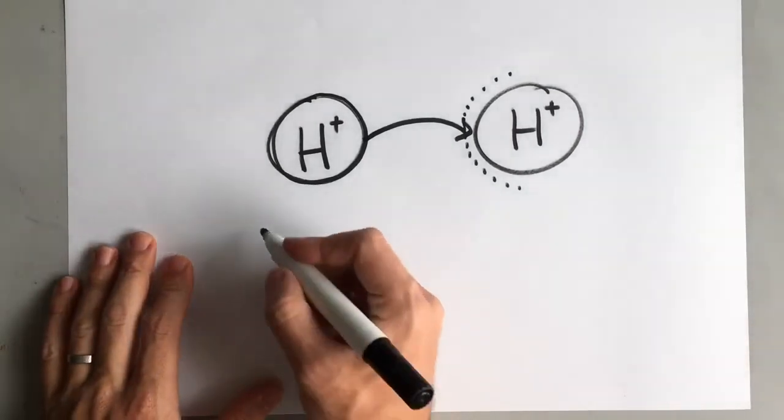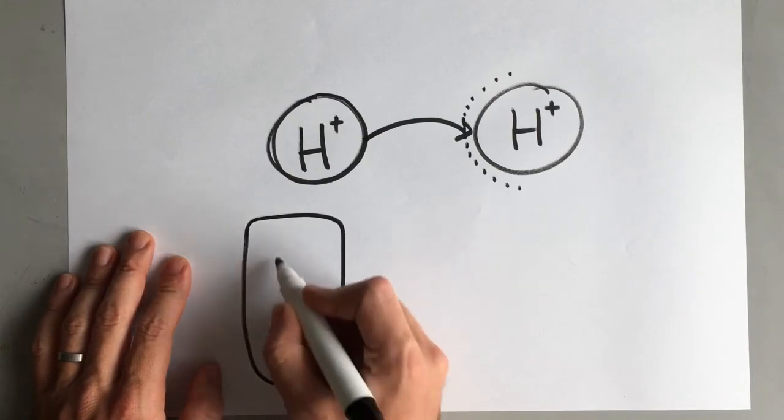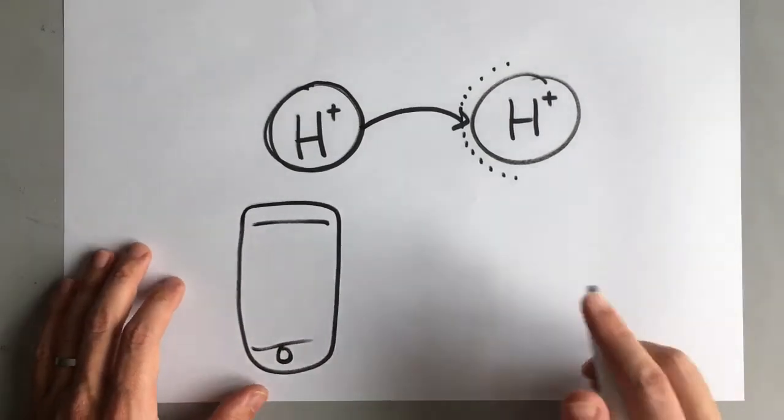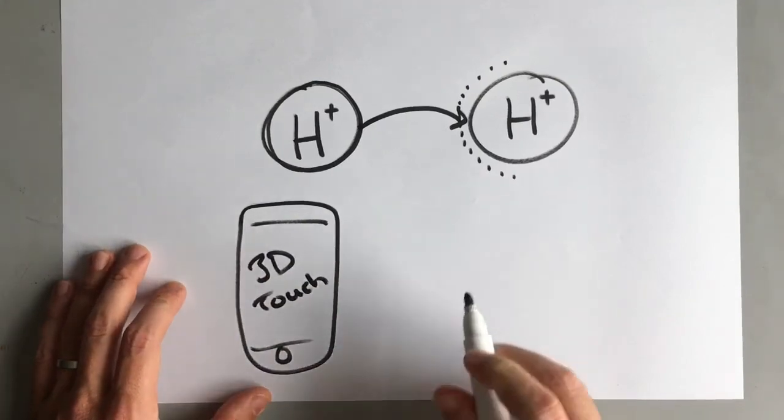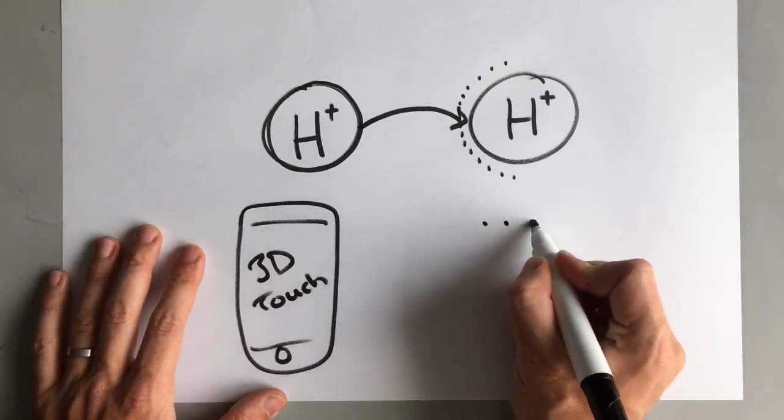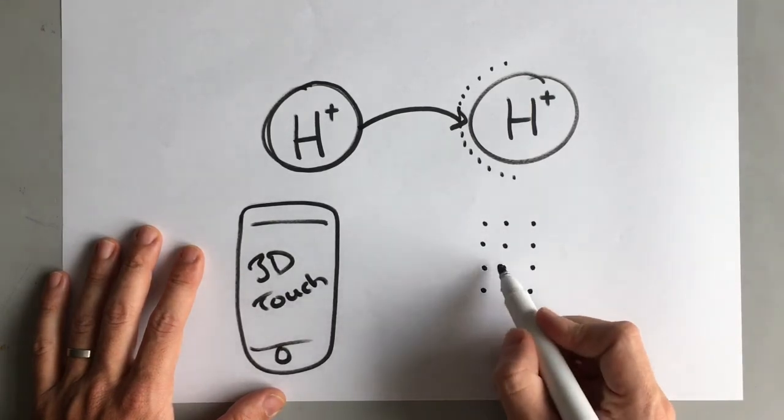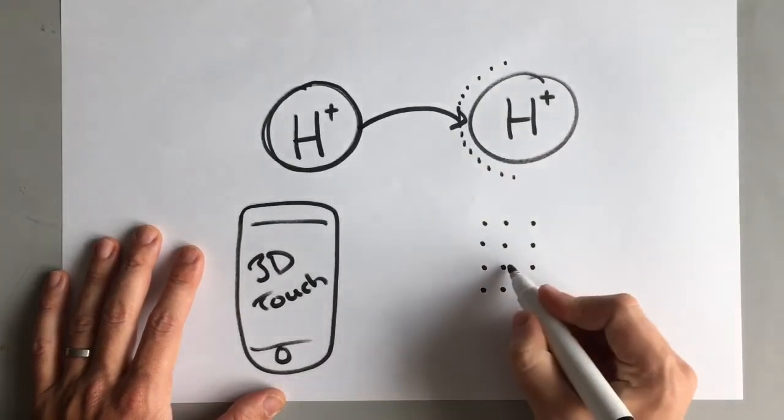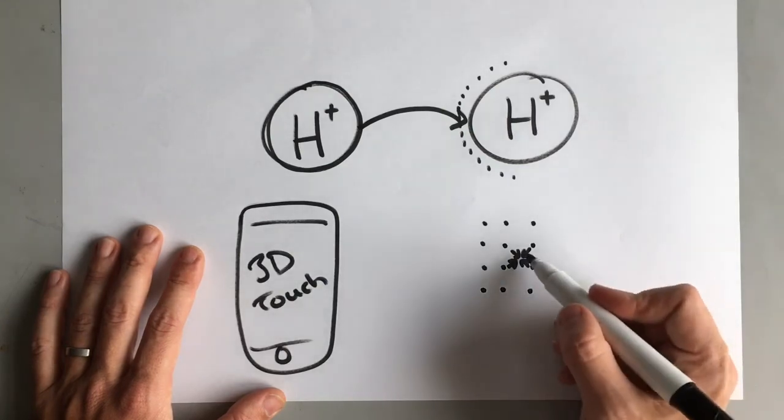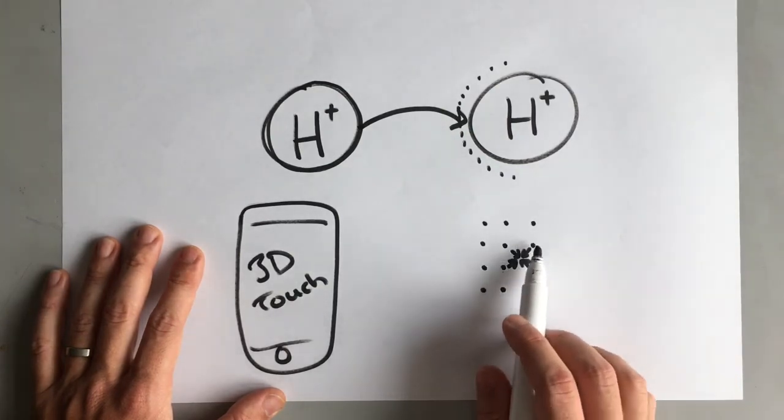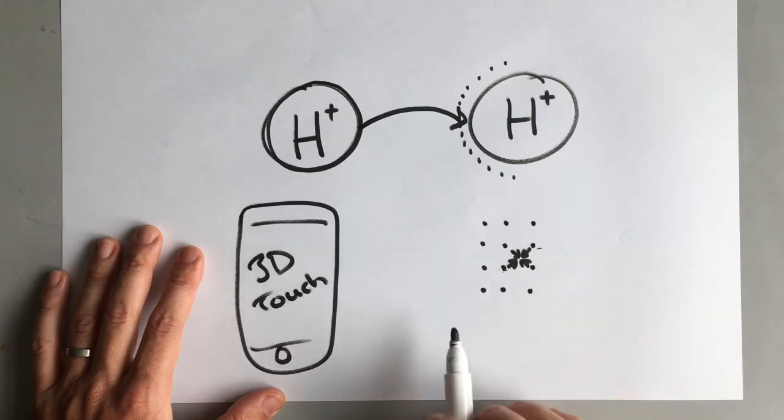And for another example, if you have one of the recent iPhones, then you have a 3D touch. Now 3D touch screens work by having lots of conducting crystals in a grid like this. And when you press a little bit harder on a particular area, those crystals move slightly closer together, and when they do move closer together, they move close enough for electrons to be able to tunnel across from one to the other.